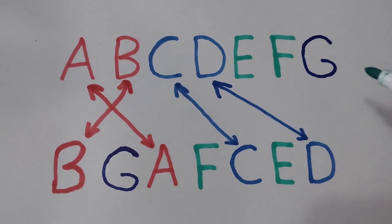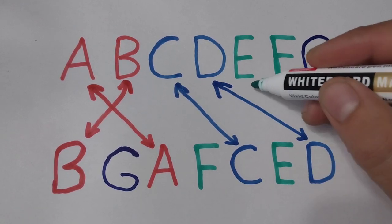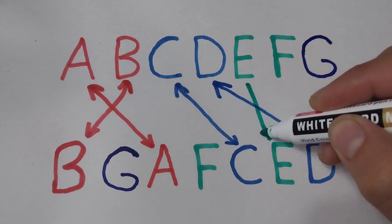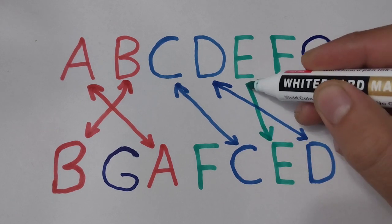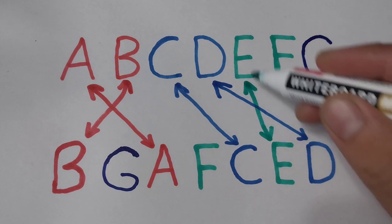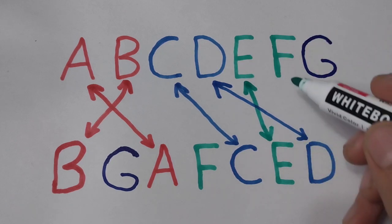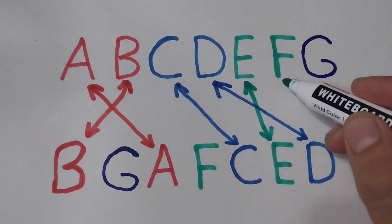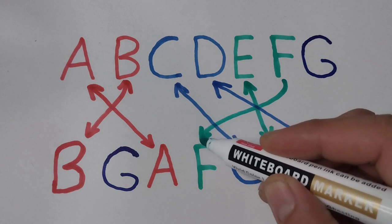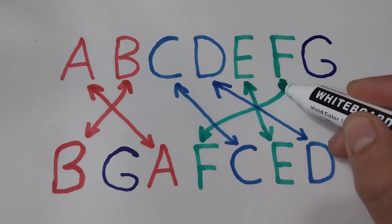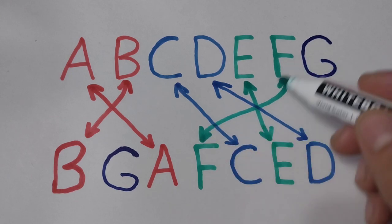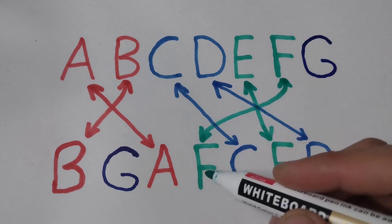E for E. This is E. And F for F. This is F.